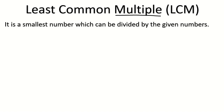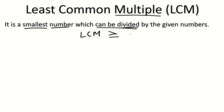Multiple means you get a bigger answer — multiple will be bigger than the given number or equal to it. So what is the Least Common Multiple? It is the smallest number which can be divided by the given numbers. In HCF, we found what can divide the numbers, but here it is what can be divided by the numbers — so LCM must be bigger than or equal to the given numbers.